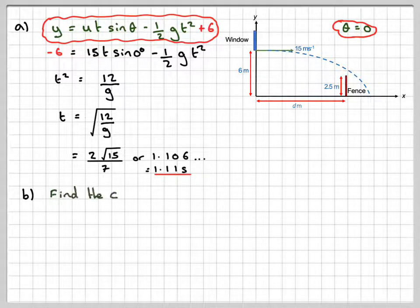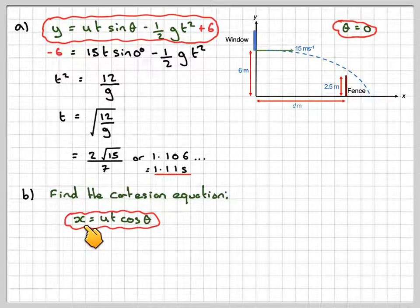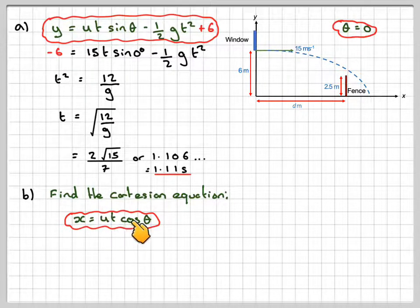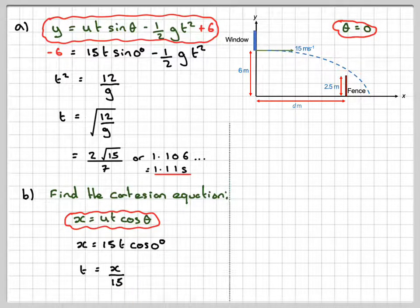Part b, finding the Cartesian equation. Well, if we take the x component, the x component for projectile motion is x is ut cos theta. Cos of 0 is 1 so we will just get that x is 15t cos of 0. So t will be x over 15.